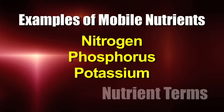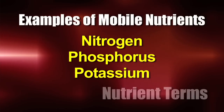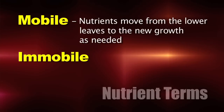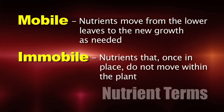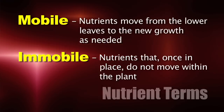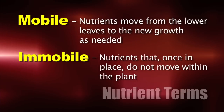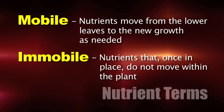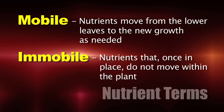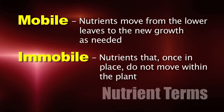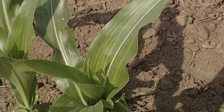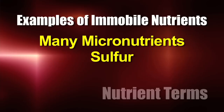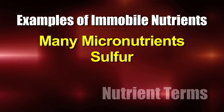The mobile nutrients we're talking about would be things like nitrogen, phosphorus, and potassium. When we talk about immobile nutrients, those ones stay right where they're put — they're building blocks that stay there. Once they're put into a leaf to build that leaf they stay there. So if a plant runs out of them as it's building new growth and doesn't have enough of a particular nutrient, it's going to show up as a deficiency at the top of the plant. Examples of immobile nutrients would be things like micronutrients and sulfur.